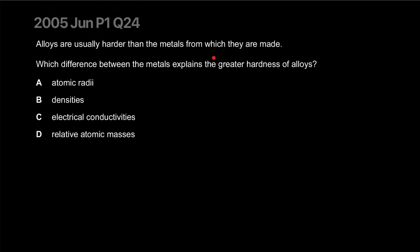Alloys are usually harder than metals from which they are made. Which difference between metal explains the greater hardness of alloys? The radii is different because when you mix different metals together, they have different radii, right? And when you try to hit them with something, these metals can't move because they are interrupted by the larger ones, like they come in the way when this top layer tries to move. So it's essentially the radii that are causing the issue. Answer is A indubitably. Densities, why would that matter? Let's move on.